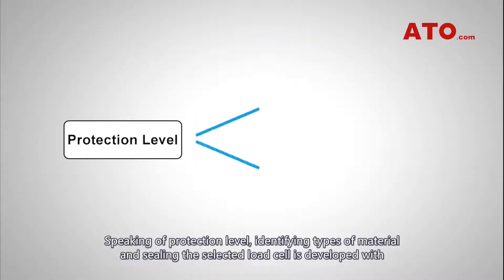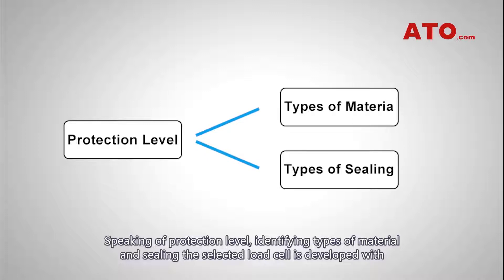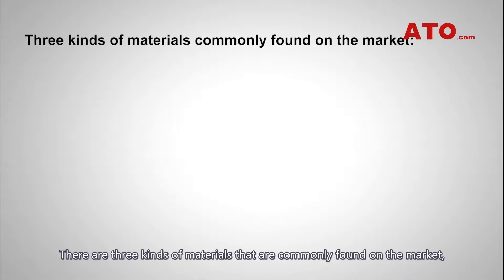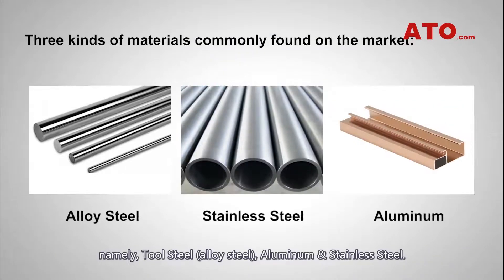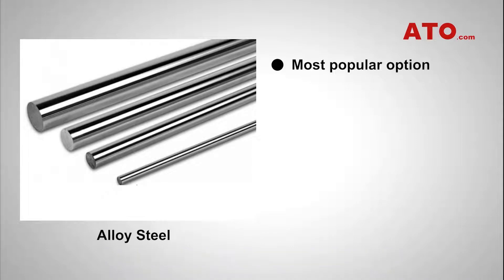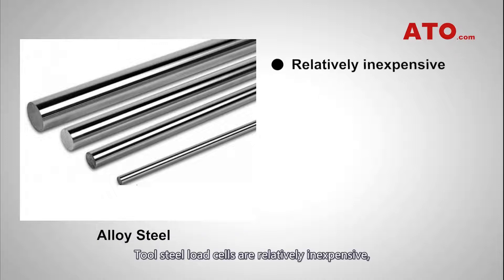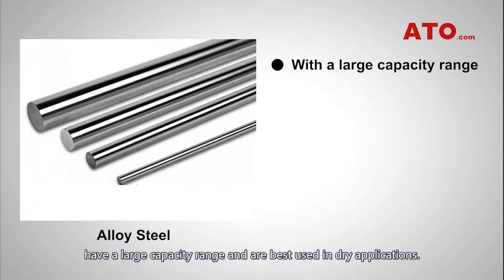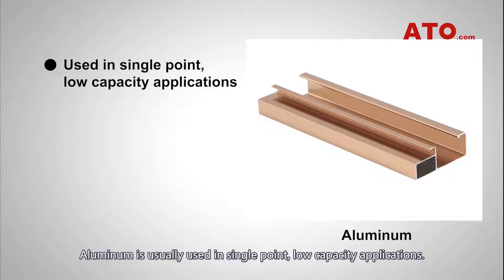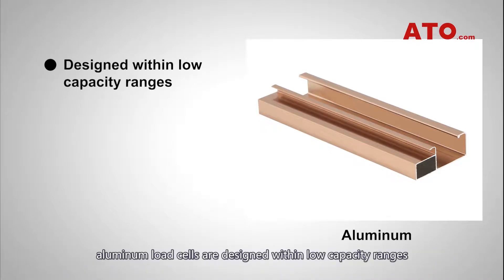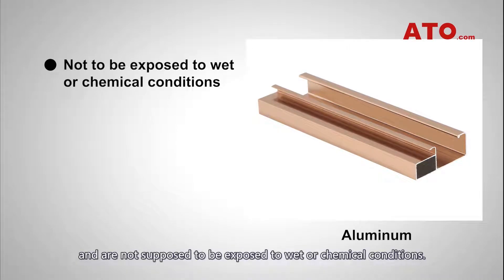Speaking of protection level, identifying the types of material and sealing the selected load cell is developed with is also a critical factor to keep in consideration in the selection process. There are three kinds of materials commonly found on the market: tool steel or alloy steel, aluminum, and stainless steel. Tool steel is by far the most popular option for load cells. Compared to other materials, the cost-to-performance ratio of tool steel elements is better. Tool steel load cells are relatively inexpensive, have a large capacity range, and are best used in dry applications. Aluminum is usually used in single-point, low-capacity applications. As the least expensive of the three materials, aluminum load cells are designed within low capacity ranges and are not supposed to be exposed to wet or chemical conditions.